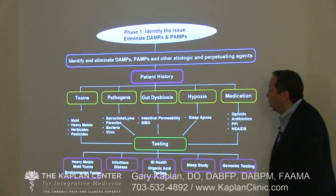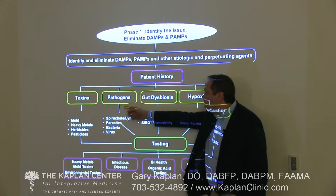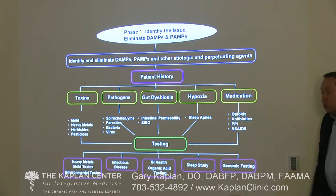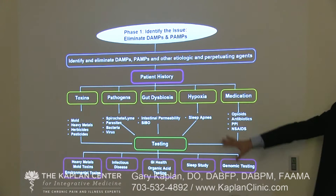Here's your flowchart. In your history you're looking for exposure to toxins and pathogens, you're looking for evidence of gut dysbiosis, you're looking for evidence of hypoxia — the most common cause of which is sleep apnea — and you're looking for medications that may be contributing to the problem.